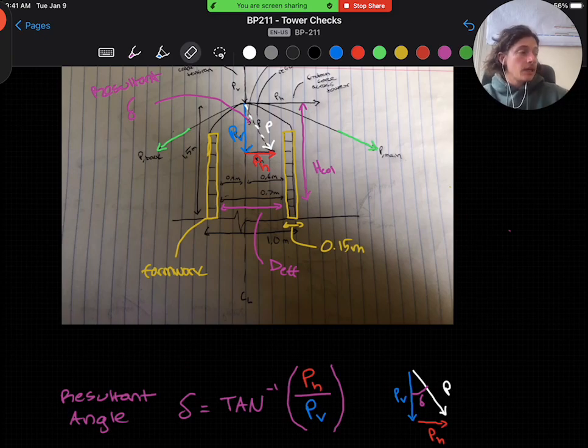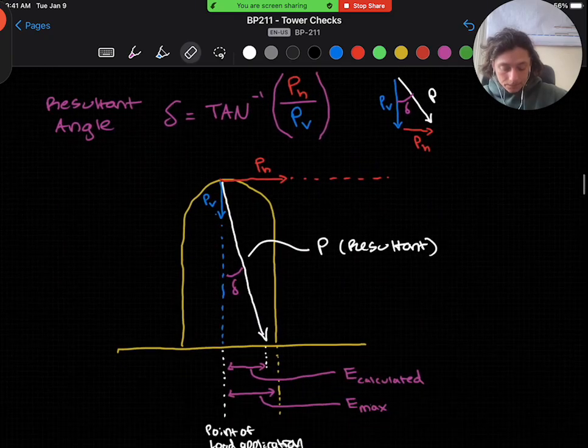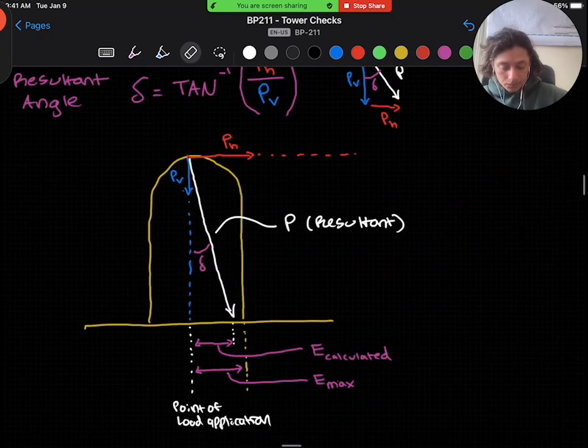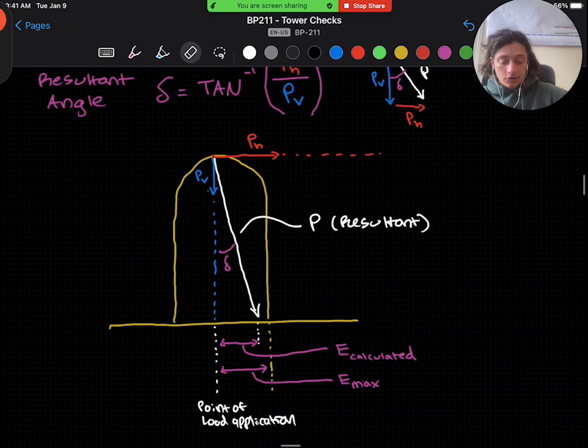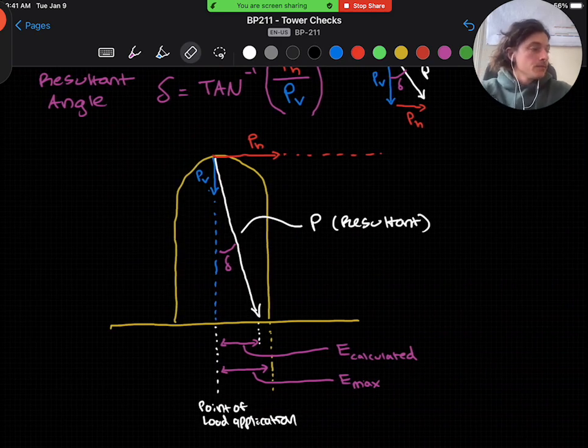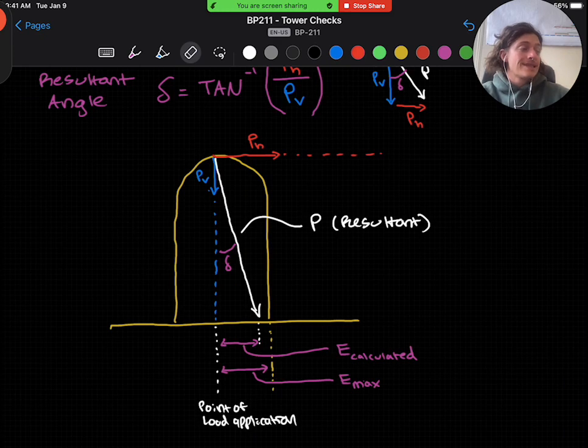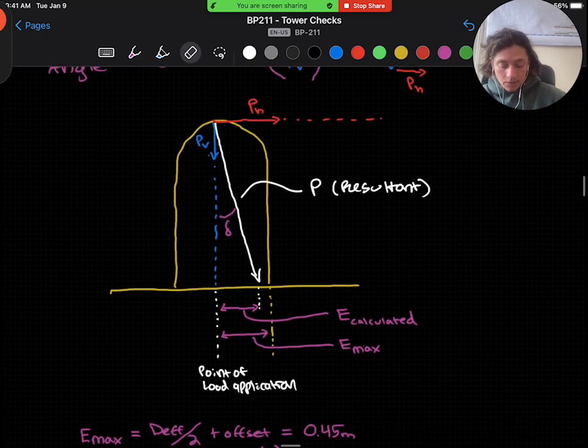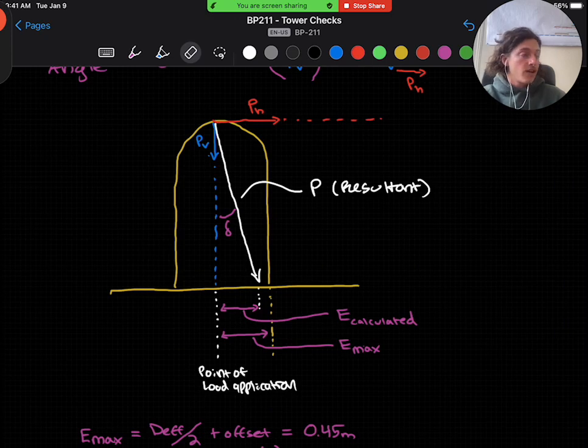Now, we have a diagram to help explain where the maximum and calculated eccentricity lie, which I have drawn out here for you. The maximum eccentricity, as long as you're using the standard tower detail, will always be half of the effective tower depth plus an offset. So d effective over 2 plus an offset will always give us 0.45 meters.